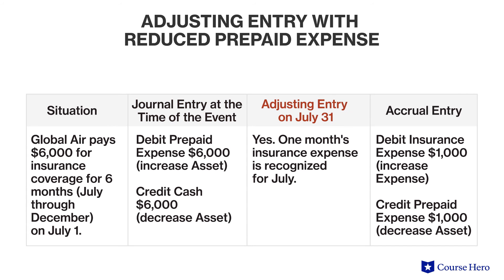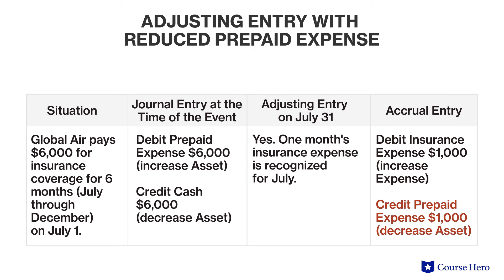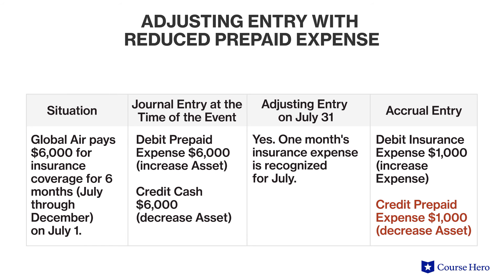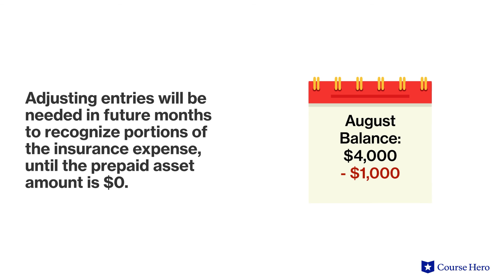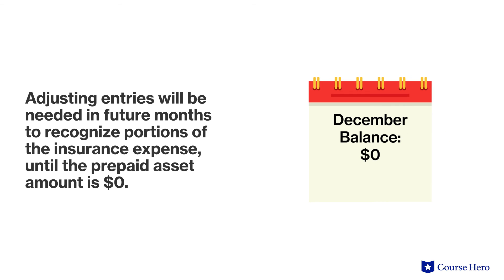At the end of July, the adjusting entry for the prepaid expense will be for one month's insurance. Therefore, one month of insurance, or $1,000, will be a recognized expense in July, while five months of insurance, or $5,000, will remain a prepaid expense, which is treated as a current asset on the balance sheet. An adjusting entry will be needed later in future months to recognize a portion of the insurance expense, gradually reducing the prepaid asset amount until it reaches zero.